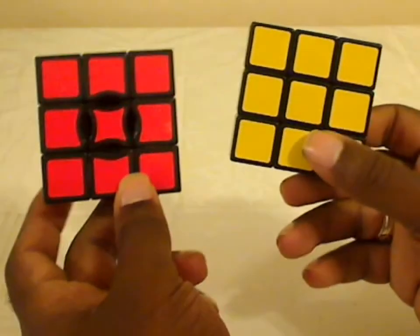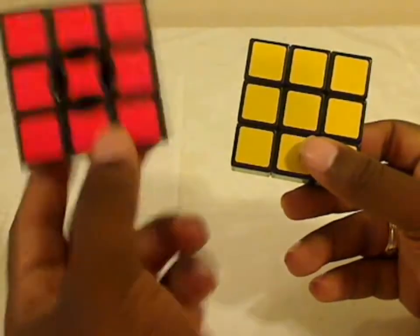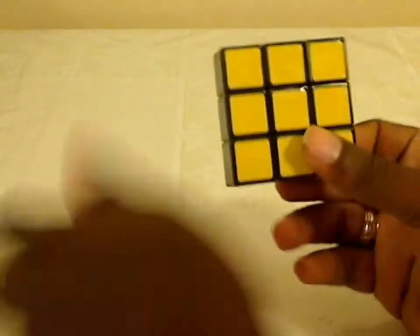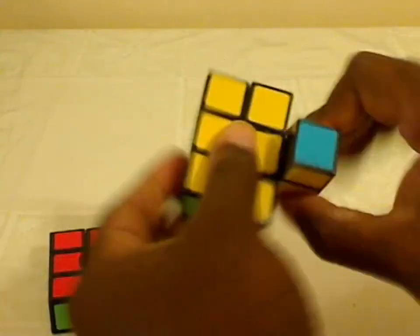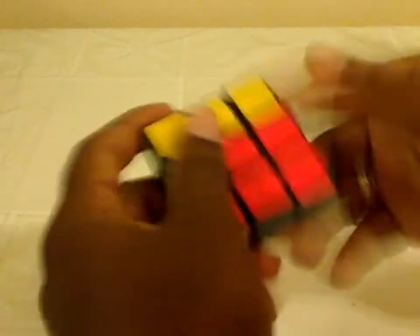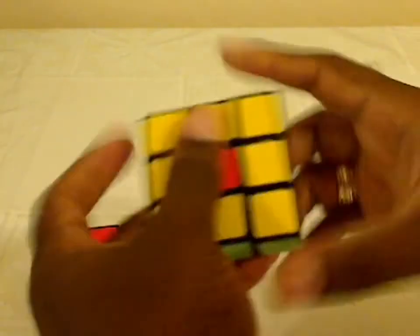Now, normally on a Floppy Cube, this is also a 3x3x1 cube, same as the Floppy Cube, but it does some additional things. On the Floppy Cube, normally you would turn the sides like this, and then mix it up.